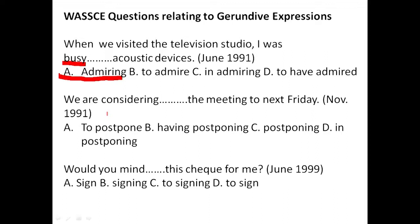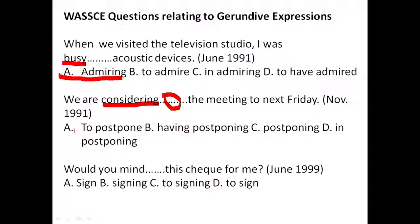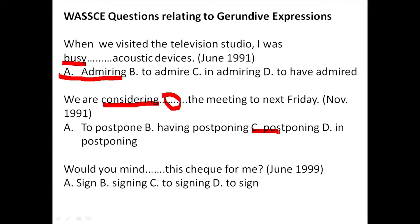Next question, November 1991: 'We are considering ___ the meeting to next Friday.' The key word is considering. Any element occupying that space should carry ING. Option A, 'to postpone,' is wrong because we have 'to' and the verb is infinitive. Option B, 'having postponing,' gives us two ING elements — that cannot be. Option C, 'postponing,' is correct: 'We are considering postponing.' Option D, 'in postponing,' is wrong. Our answer is C.